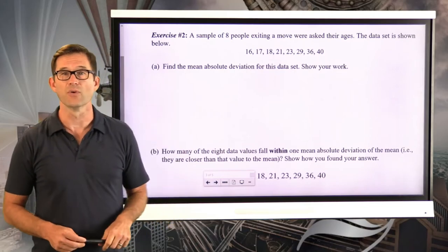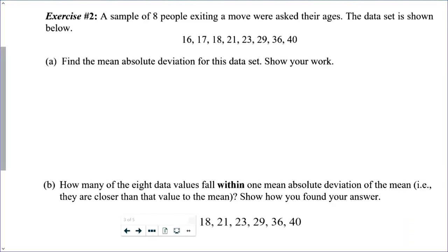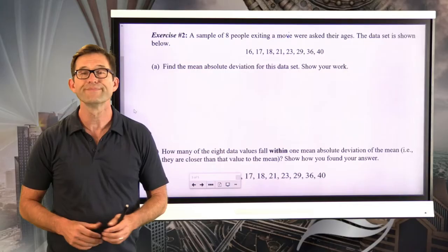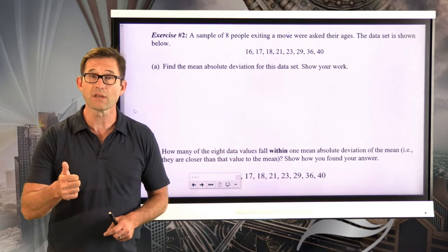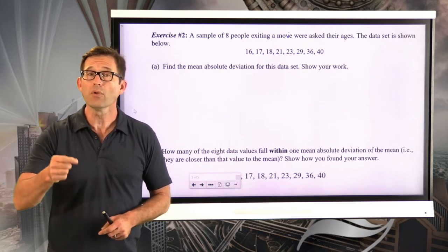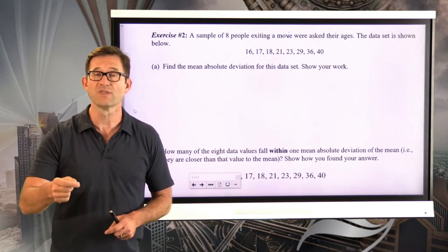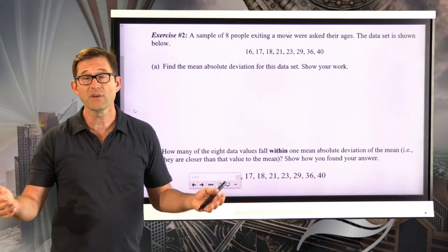Let's take a look at exercise number two. A sample of eight people exiting a movie were asked their ages — the data set is shown below. Letter A asks us to find the mean absolute deviation for this data set. Finding the mean absolute deviation takes some time, primarily because the first thing you have to do is find the mean — I need to know how far on average these data points are away from the mean, so I have to know the mean in the first place.